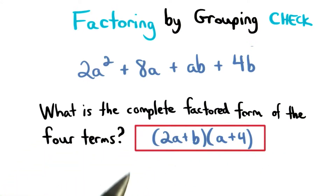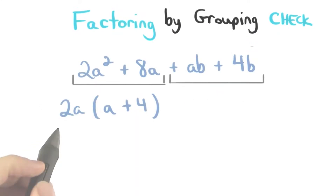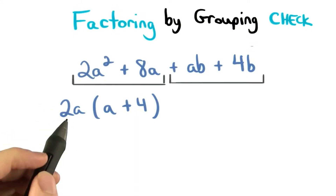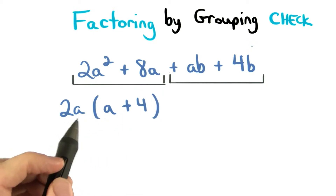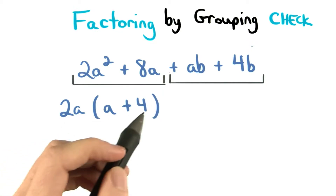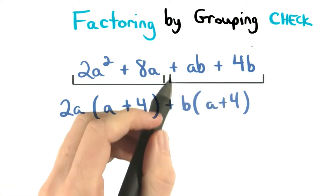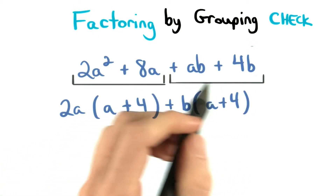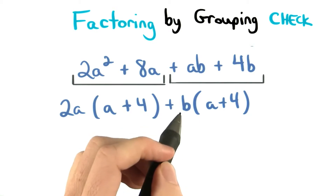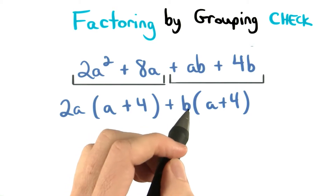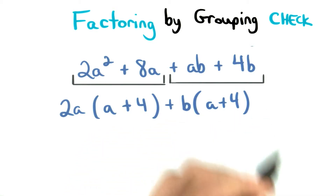Here's the correct answer, and great job if you got it right. We can factor a 2a from the first two terms to give us 2a times a plus 4. The second two terms share a b, so we can factor that out, leaving us with b times a plus 4.